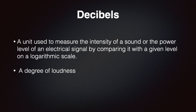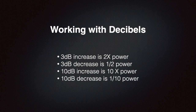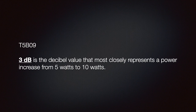For the exam we need to understand decibels. A decibel is a unit used to measure the intensity of a sound or the power level of an electrical signal by comparing it to a given level on a logarithmic scale. Working with decibels is really easy, especially if you memorize the following: a 3 dB increase is two times the power; a 3 dB decrease is half the power; a 10 dB increase is 10 times the power; and a 10 dB decrease is one tenth of the power.